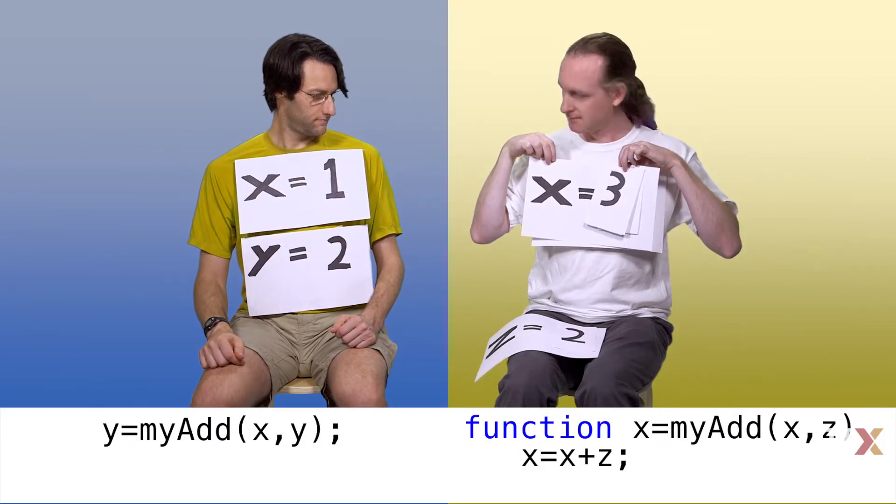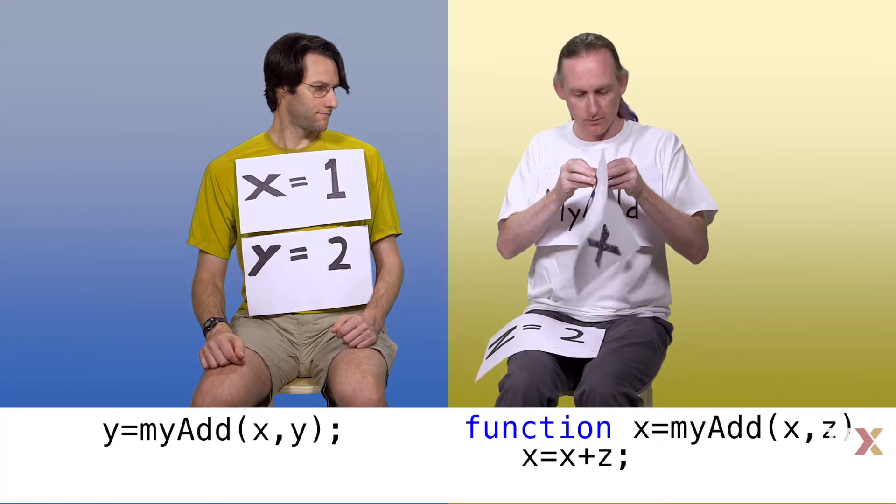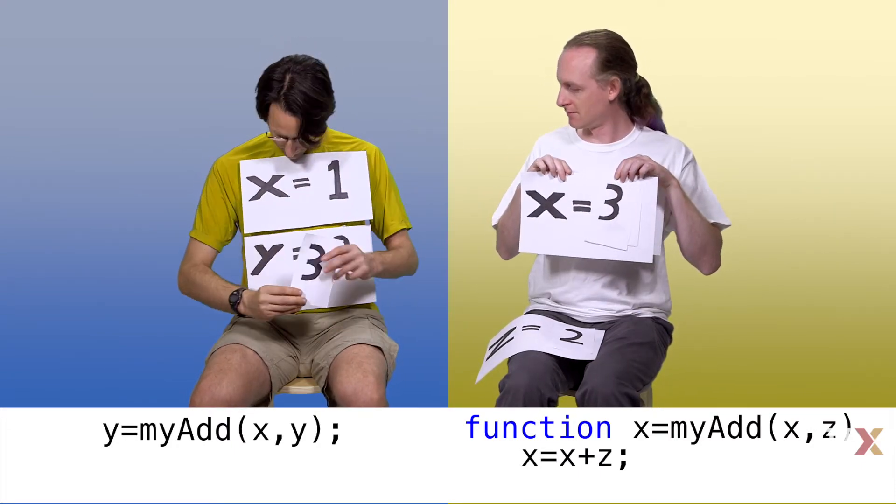Now there are no more lines of code in the function. It returns a value, 3 in this case, to the script that called it. The script stores this value in y.